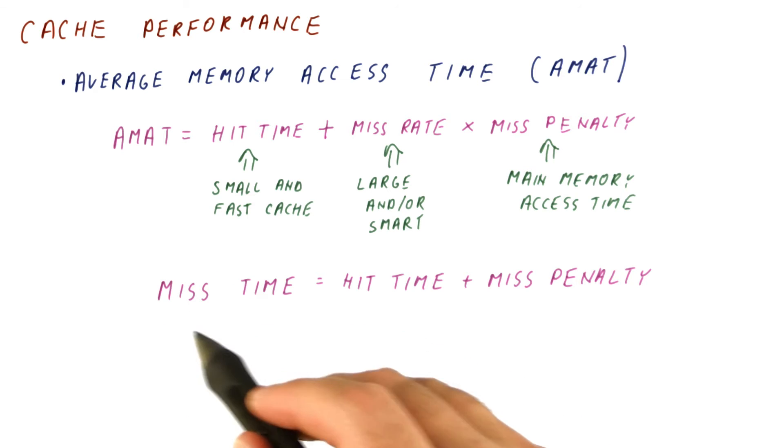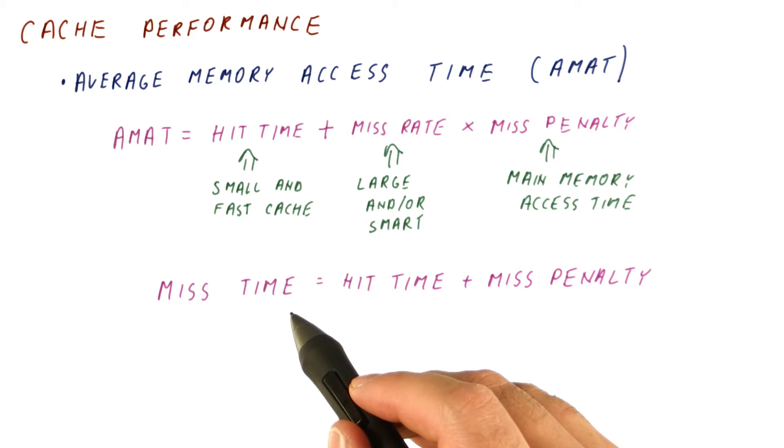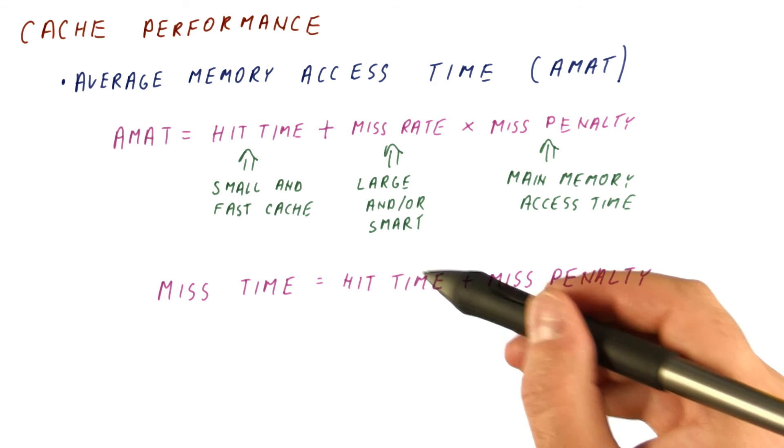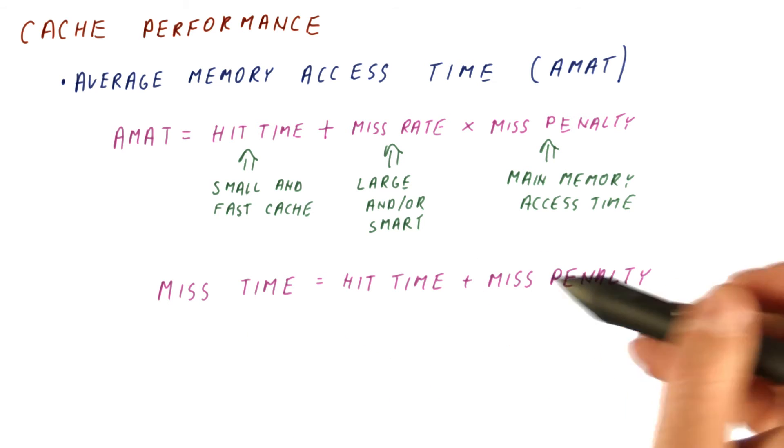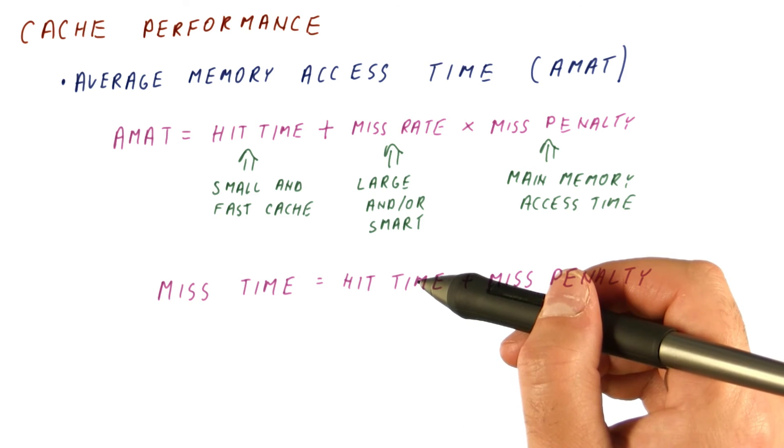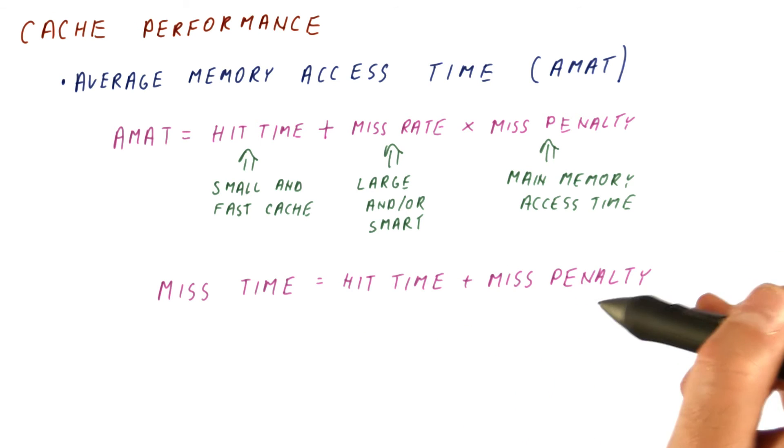Sometimes we also talk about miss time, which is the overall time it takes to have a cache miss. A miss time is simply the hit time followed by the miss penalty, because we try to find what we have in the cache, but fail, and then we still have to pay the miss penalty.